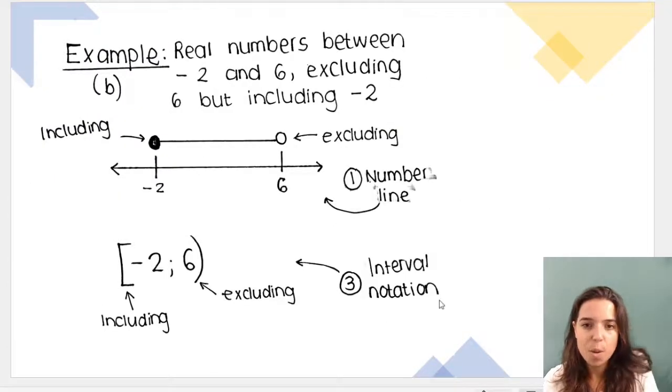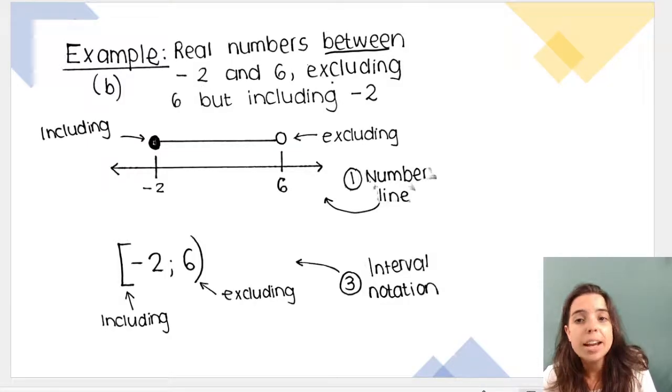Here's another example. Real numbers between negative 2 and 6, excluding 6, but including negative 2. So if we exclude 6, it needs to be an open dot, like you see there. Including negative 2 would be this colored-in dot over here. So we go from negative 2, we go to 6. Obviously, we put negative 2 on this side, because it's smaller than 6. And this is the number line.